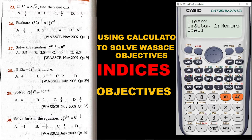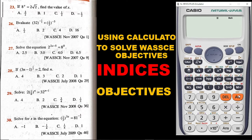Let me clear the calculator once again so I can solve the next question. For safety purposes in examination, learn to always clear the calculator. The next question: if (3^(n−1))^(1/3) = 2, find n. What we do is enter this equation on the calculator. So I open the brackets and I have 3.